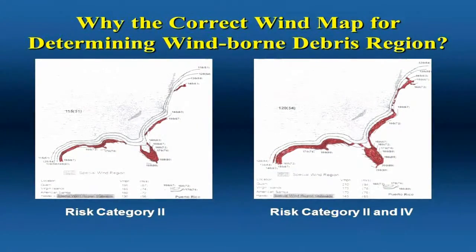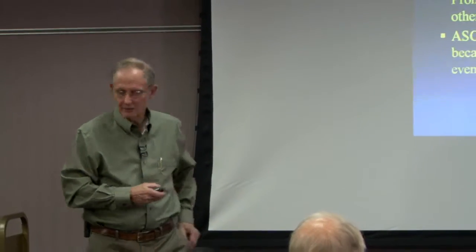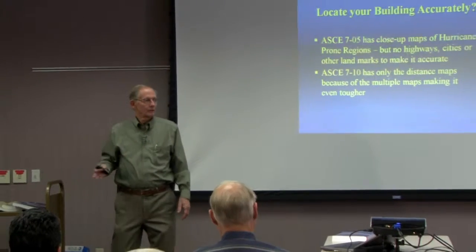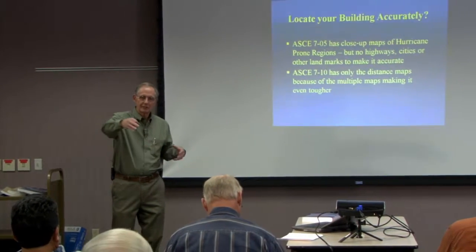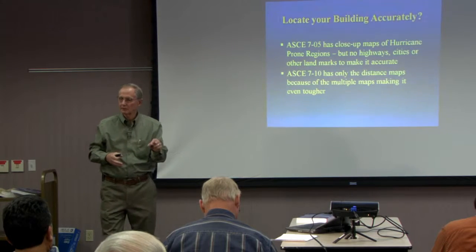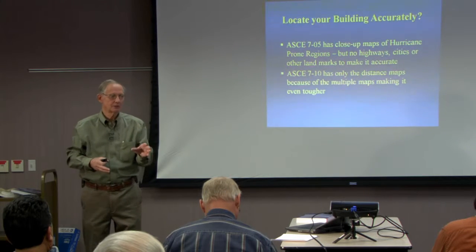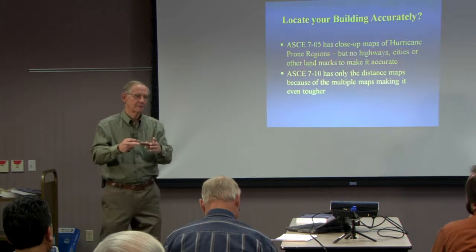This has quite a major effect. So how do you locate your building accurately? In the 05 version, we have a map that is blown up in the hurricane area so you can more closely identify where the building is. But it doesn't show cities, it doesn't show roads. At least you have a county, and you can locate the building within that county.